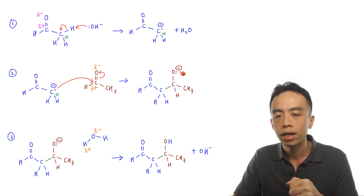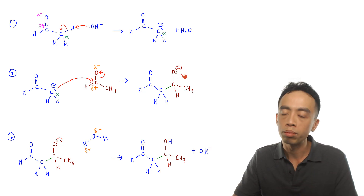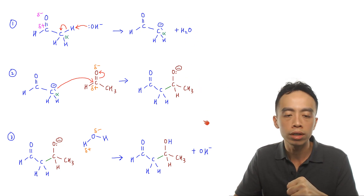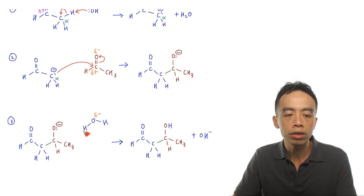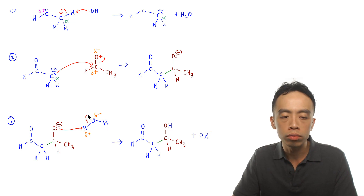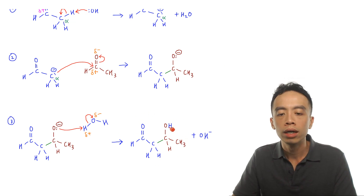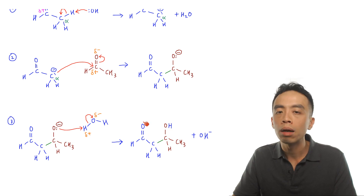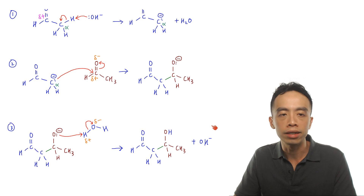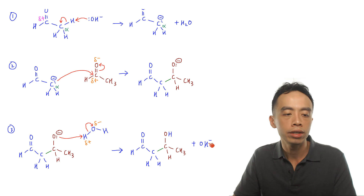Once we have the O⁻, it subsequently picks up a proton. The H⁺ comes from the water byproduct produced in step one. The water donates H⁺ to the O⁻, and the O–H bond breaks with both electrons going back to oxygen, giving us the beta hydroxy carbonyl compound as product and regenerating OH⁻ as catalyst.